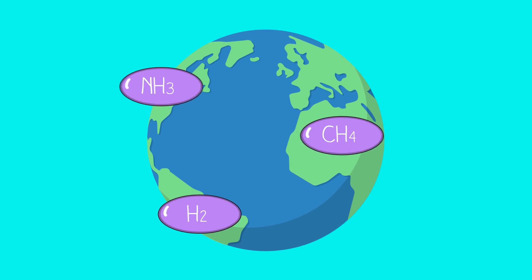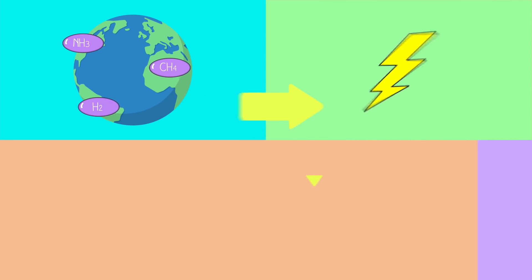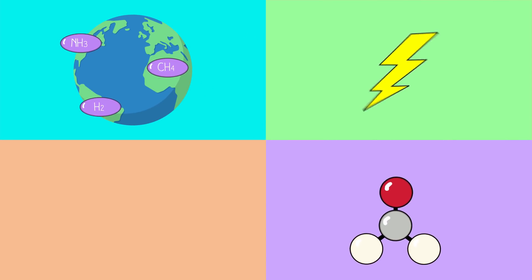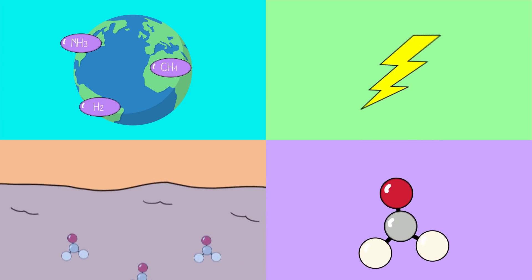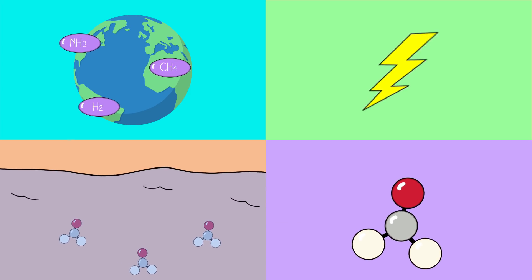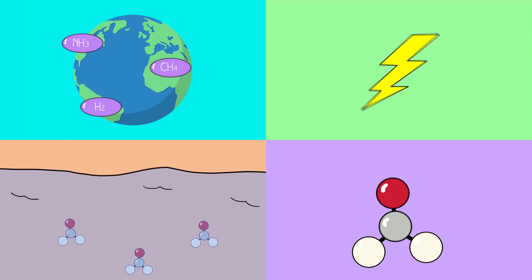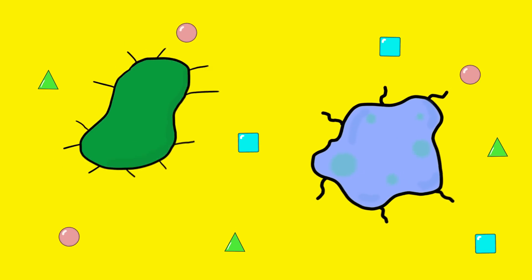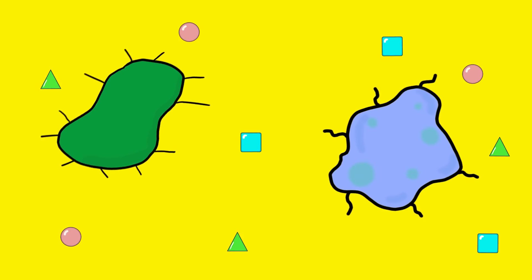Early Earth had a chemically reducing atmosphere. This atmosphere, exposed to energy in various forms, produced simple organic compounds. These compounds accumulated in a so-called soup, which may have been concentrated at various locations such as hydrothermal vents or shorelines. By further transformation, more complex organic polymers, and ultimately life, developed in the soup.